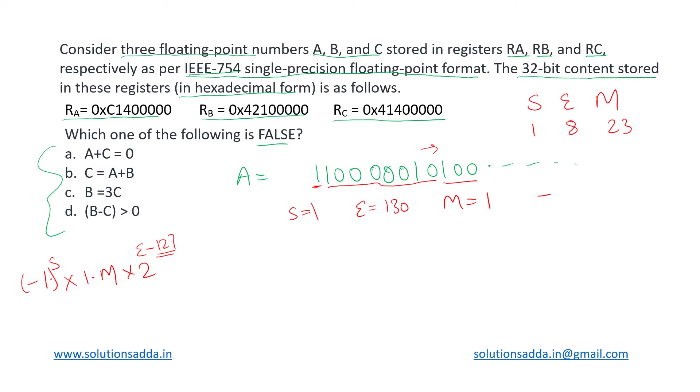This gets evaluated as: sign bit is 1, so this will be a negative number. So minus of 1.1 into 2 to the power 130 minus 127, which means 3. We can write that as we can add two more zeros to this—it is allowed to add as many zeros as we want.